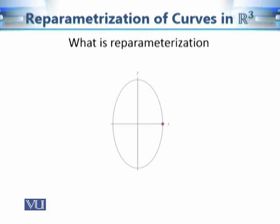The answer is yes — they are reparameterizations of each other, and that is the focus of this module. Besides direction, there are other ways two functions can represent the same path with different properties. Another such property is speed. Consider an example where we have two players running around a circular path, each moving at their own pace.